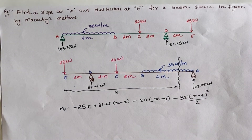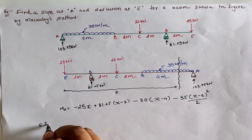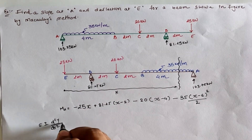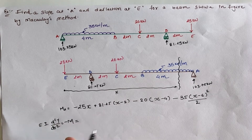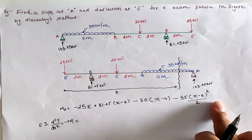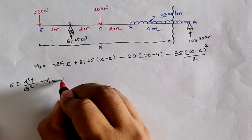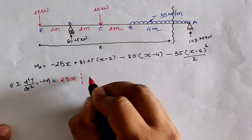Now applying the elastic curve equation for this mirror image: EI·d²y/dx² = −M. We have to multiply minus into all the moment values. Therefore, EI·d²y/dx² = 25x, separating all moments accordingly.